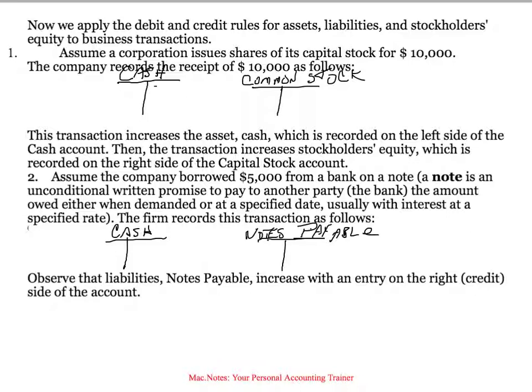Let's apply this debit and credit rule. Assume a corporation issues shares of its capital stock for $10,000. Two accounts are affected: cash and common stock. The company now has $10,000 in cash, so its cash account has gone up. Cash is an asset account, so we record that increase on the left-hand side of cash. We've also issued common stock, so shareholders' equity has increased, and an increase in shareholders' equity is recorded on the right-hand side of that account. We have equal left and equal right.